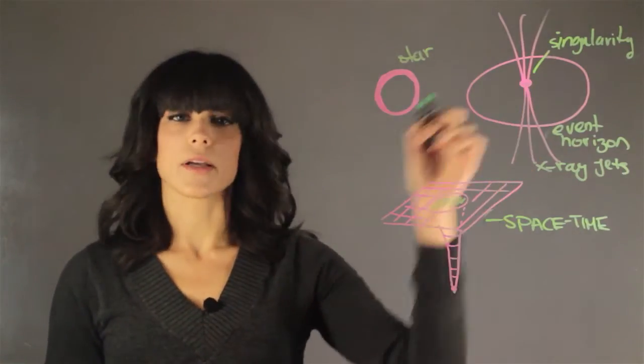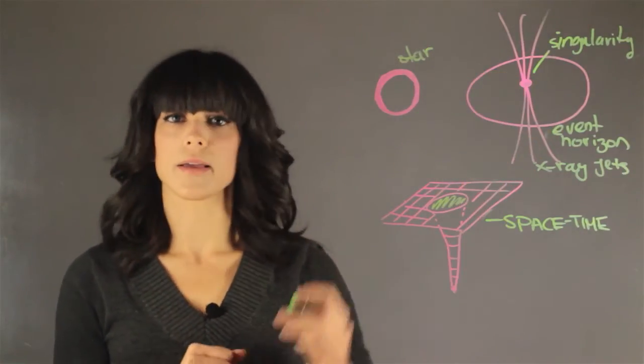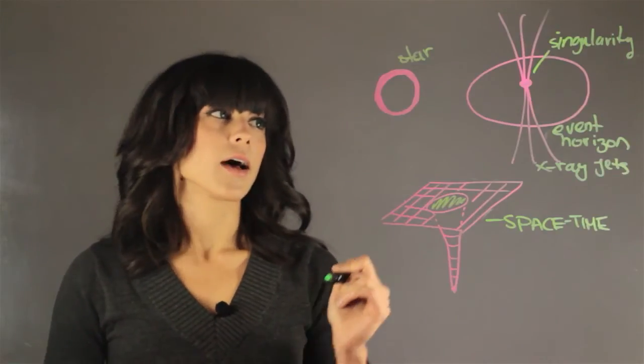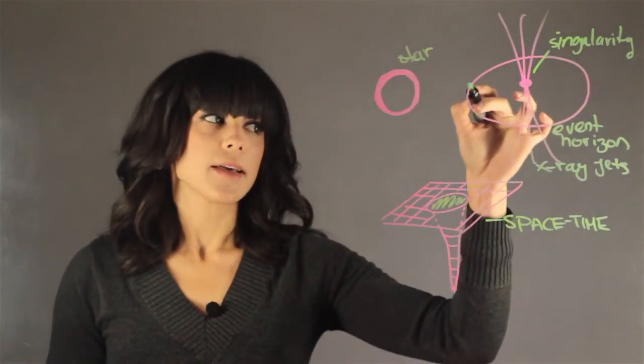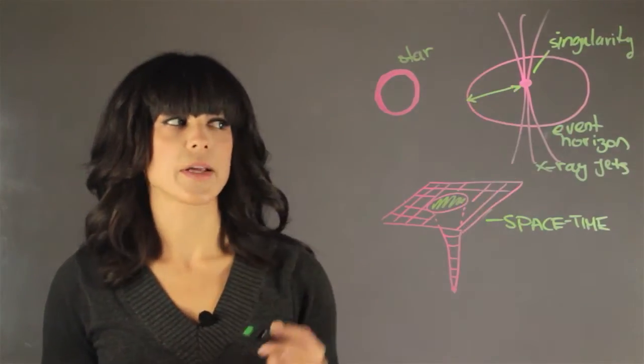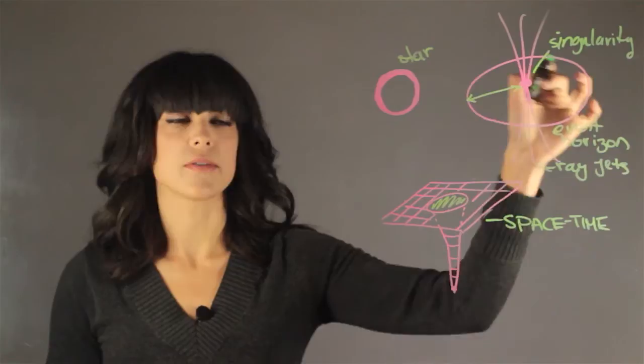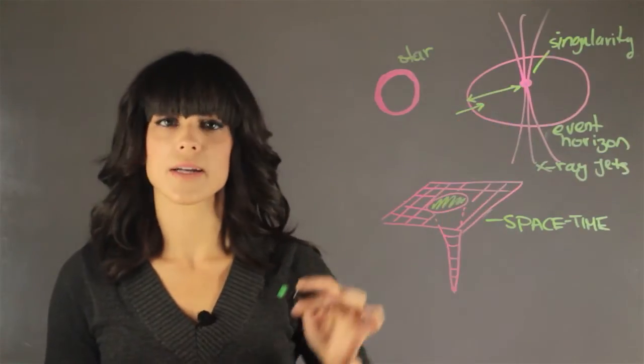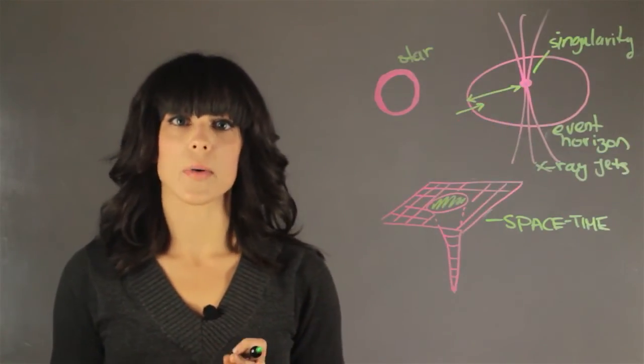So if we had a singularity, we have this point-like object that is very massive. Everything that passes the event horizon—there is a distance here, this radius, this line called the event horizon—anything that passes the event horizon does go into the black hole.